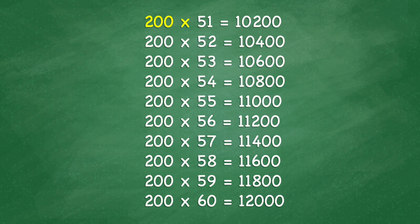200 times 51 equals 10,200. 200 times 52 equals 10,400. 200 times 53 equals 10,600. 200 times 54 equals 10,800. 200 times 55 equals 11,000.